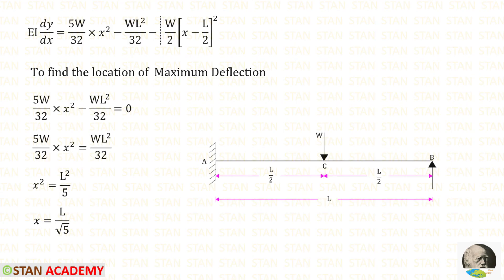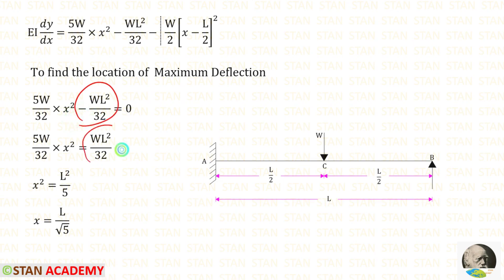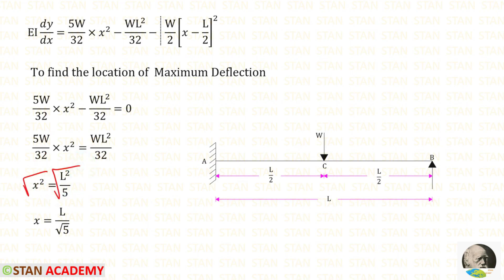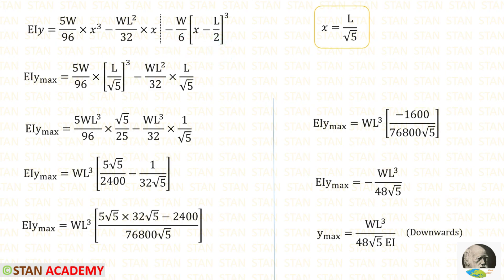Now we are going to find the maximum deflection. When the slope is 0, the maximum deflection occurs. Taking the slope equation and equating to 0 — the maximum deflection occurs between C and B so we do not consider the Macaulay bracket term — taking the term to the right side, cancelling 32 and W, taking 5 to the denominator, and taking the square root of both sides, we get x equals L upon root 5. This is the location of maximum deflection. Substituting x equals L/root 5 into the deflection equation (again not considering the bracket term), we get a negative value for the maximum deflection, confirming it is downward.